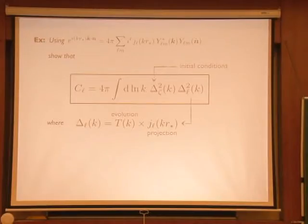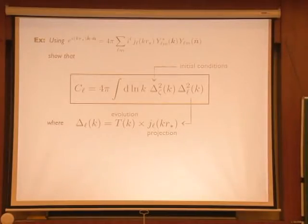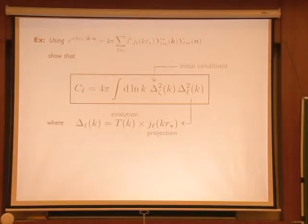You could either do this brute force by multiplying by the complex conjugate of a spherical harmonic and integrating over angle, using orthogonality. Or you use the Rayleigh plane wave expansion, where you expand the plane wave into a product of spherical harmonics and extract the coefficient of each spherical harmonic basis function. I leave that to you as an exercise — it's just algebra. In the notes you can see the steps. If you then extract the multipole coefficients and calculate the power spectrum, you should find this expression.